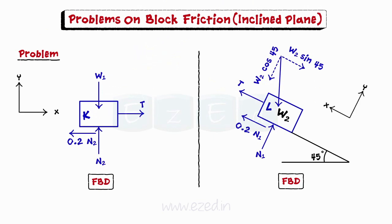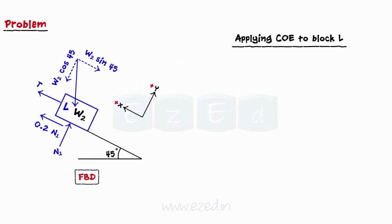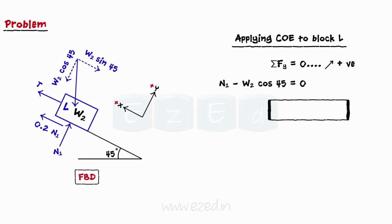Taking different axes for block K and block L as shown. Since block L is on an inclined surface, its axis is taken differently. The sign convention is assigned according to the direction of the applied force. Now we will apply conditions of equilibrium to block L. We will first equate the summation of all forces in the y direction to 0, finding a relation between the normal reaction N1 and the weight force W2.